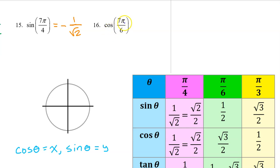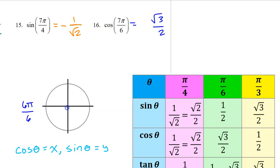Number 16. The cosine of 7π/6 will be the same as the cosine of π/6, which is √3/2, except it might be negative depending on the quadrant. We can think of π as 6π/6, therefore 7π/6 will be one multiple beyond this — that is in the third quadrant. Cosine is the x value on the unit circle, and in the third quadrant x values are negative. So the answer will be negative √3/2.